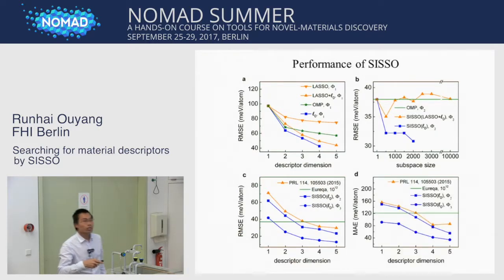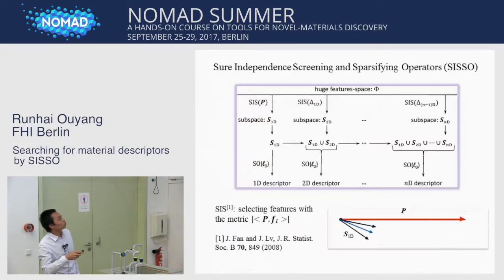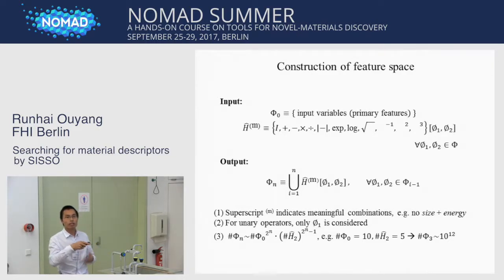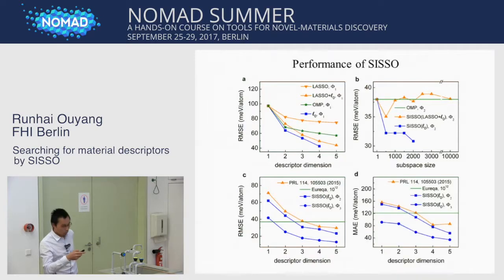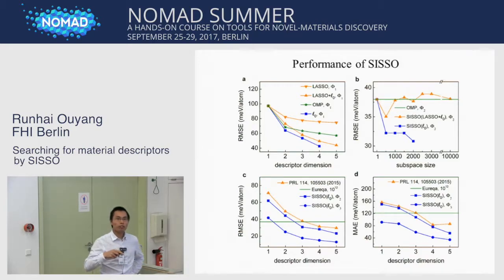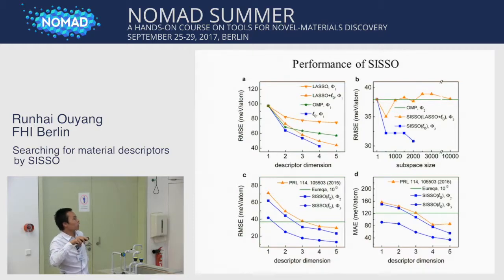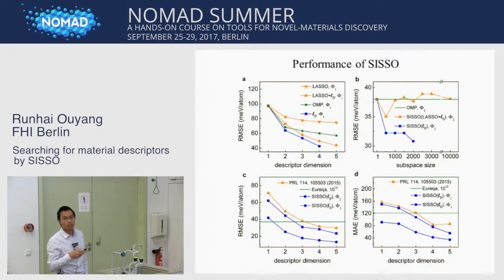Audience question: Could you repeat the meaning of phi_1, phi_2, and phi_3? Speaker: Yes — phi_0 is the input variables; we apply the operator set to phi_0 to get phi_1, apply it to phi_1 to get phi_2, and we take the union of all of these. We also check the maximum absolute error from the training: the blue circles are well below the orange, and even for 1D, the blue circles have a much lower maximum absolute error than Eureka. This result shows that CISO has the best performance.